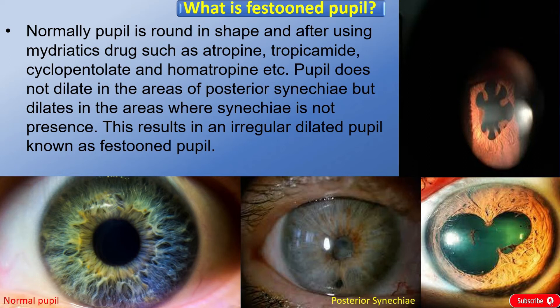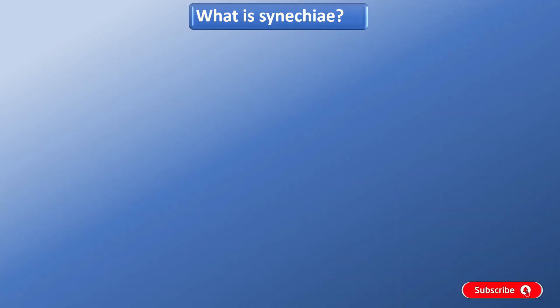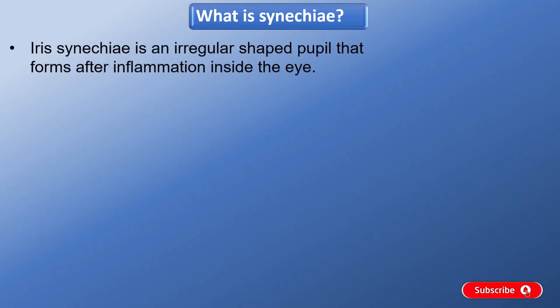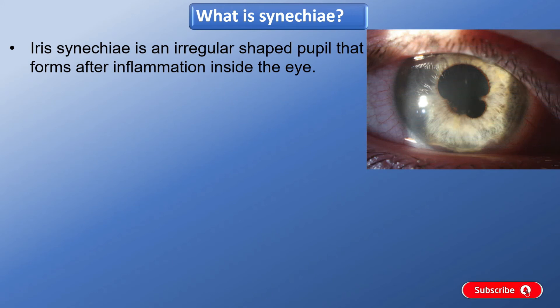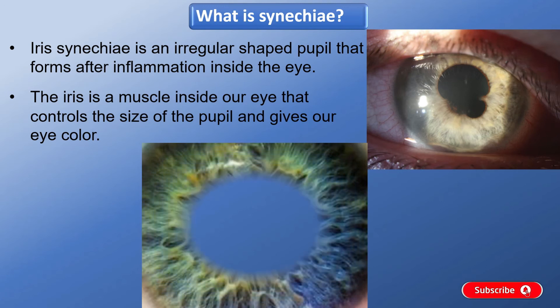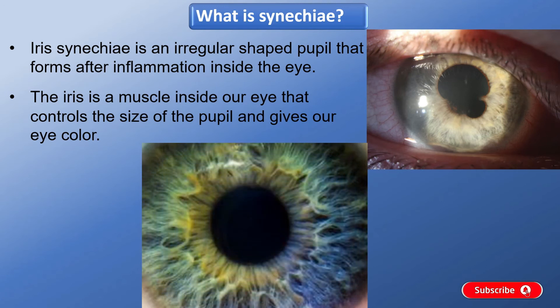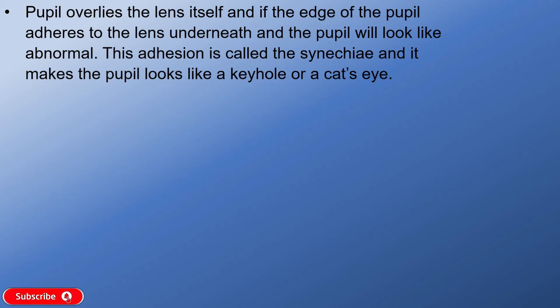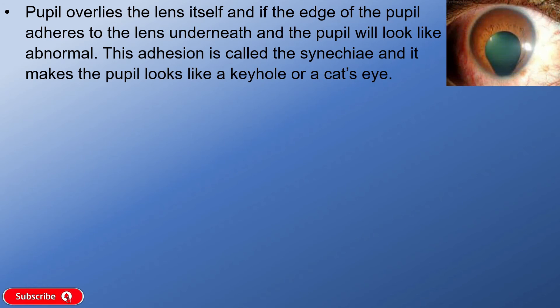Now friends, you are thinking what is synechia? Synechia is an irregular shaped adhesion that forms after inflammation inside the eye. The iris is a muscle inside our eye that controls the size of the pupil and gives our eye its color. When the iris is inflamed due to trauma and uveitis, it becomes sticky and wants to scar to nearby structures. As we know, the pupil overlies the lens, and if the edge of the pupil adheres to the lens underneath, the pupil will look abnormal. This adhesion is called synechia, and it makes the pupil look like a keyhole or a cat's eye.